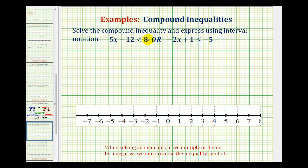We want to solve the compound inequality and then express the solution using interval notation. Notice this compound inequality consists of two inequalities connected by the word OR, which means the solution will consist of all the values that satisfy the inequality on the left, as well as all the values that satisfy the inequality on the right.